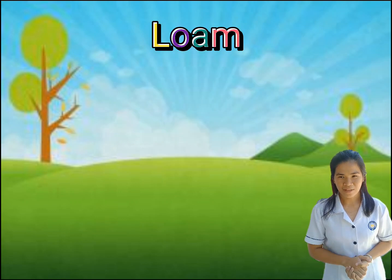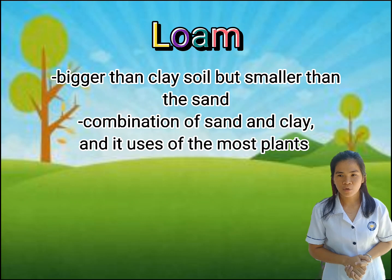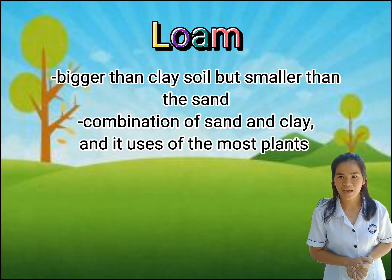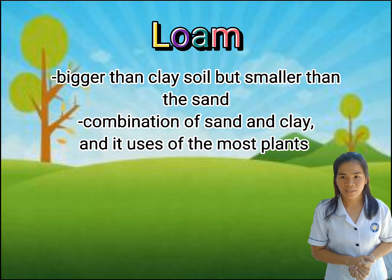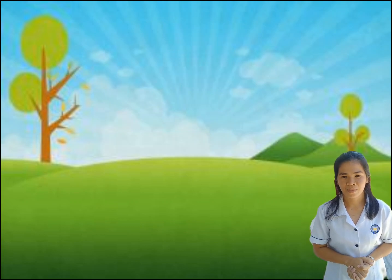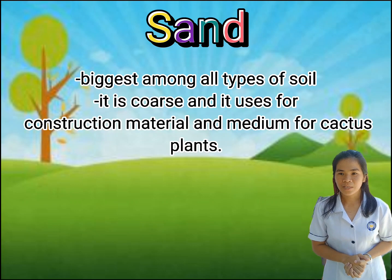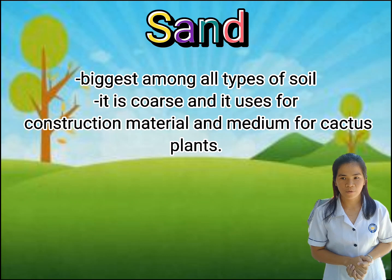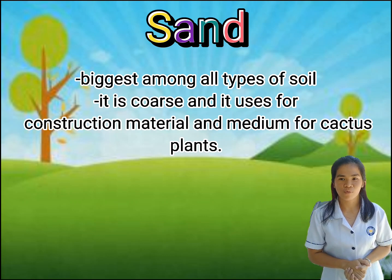Loam soil is bigger than clay soil but smaller than sand soil. It is a combination of sand and clay and is used for most plants. Sand is the biggest among all the types of soil. It is coarse and is used for construction materials and as a medium for cactus plants.